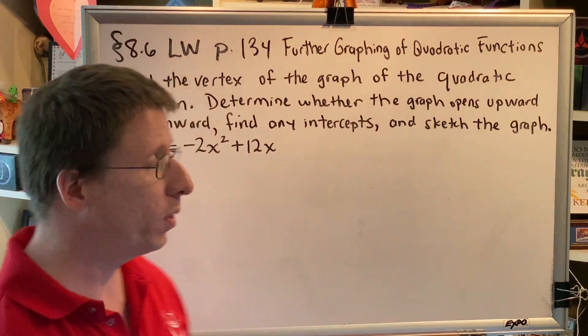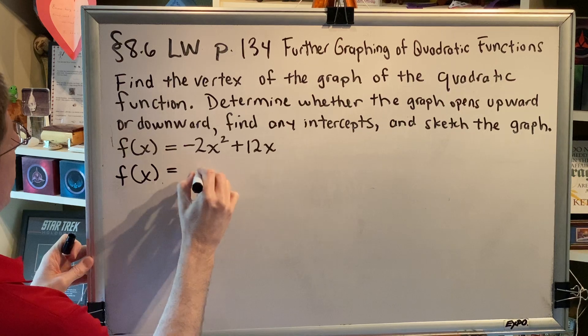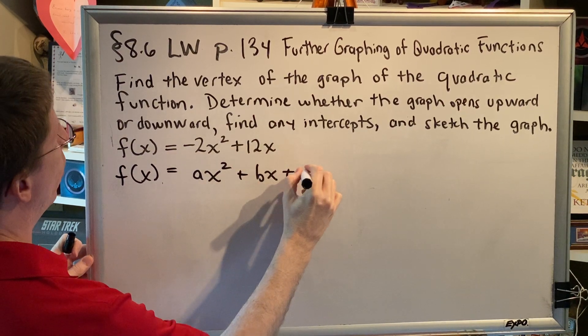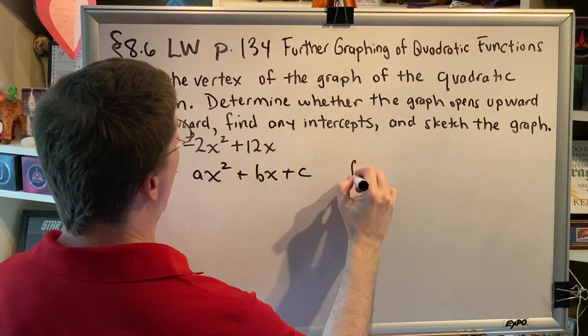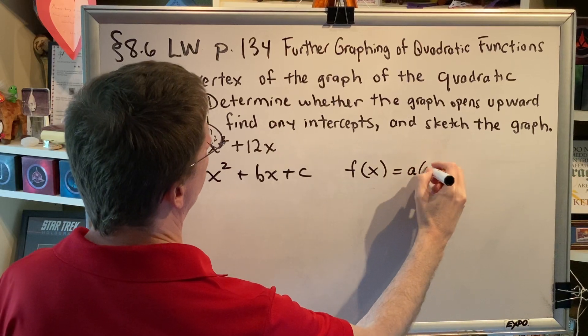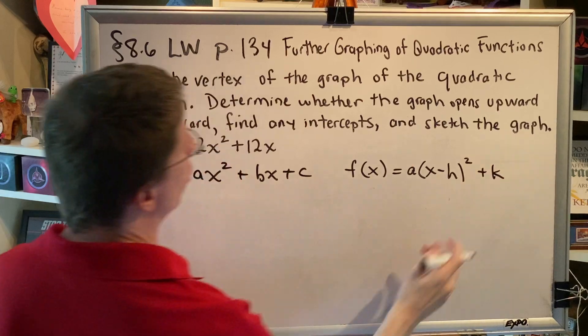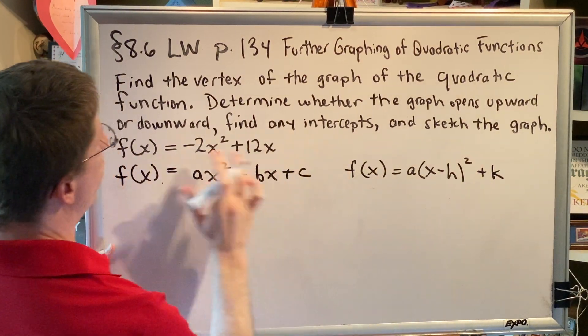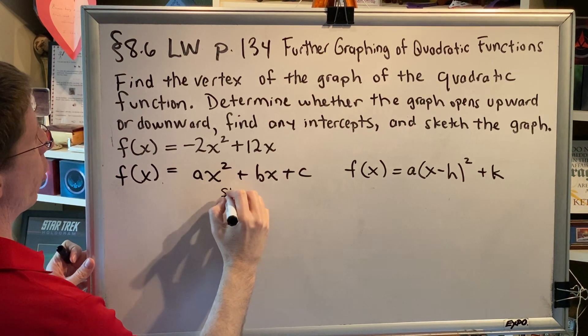The first thing that we need to do here is to recognize the form of the equation that we've been given. This looks like the standard form for a parabola, ax² + bx + c. It does not look like the vertex form of a parabola. You can see that the vertex form of a parabola has those parentheses with an exponent of 2 there, which this is missing. So we are dealing with the standard form.